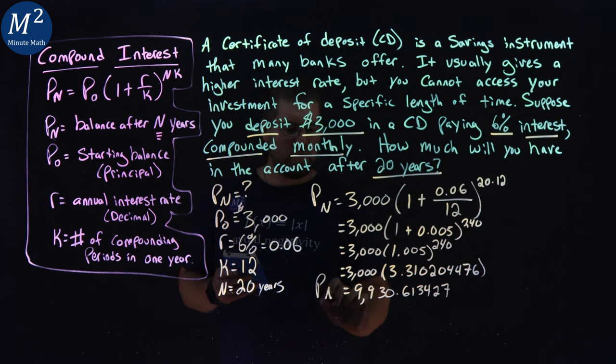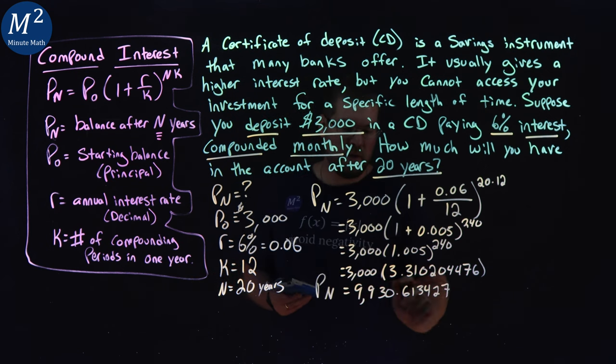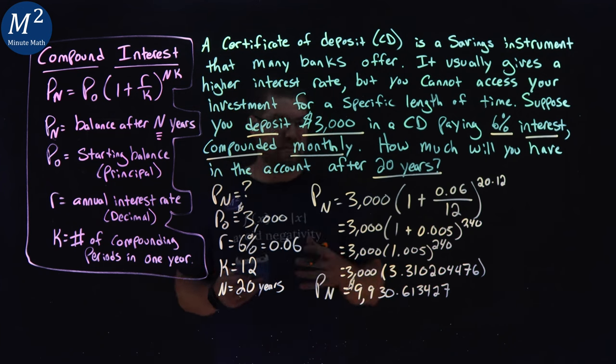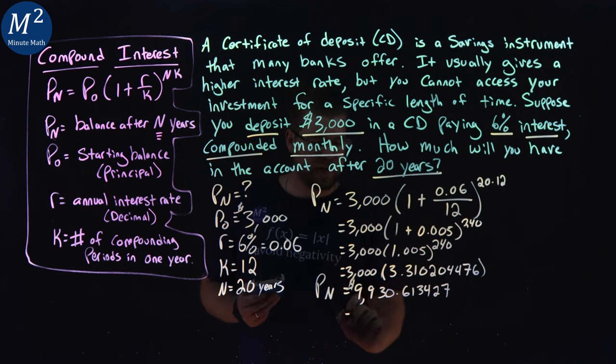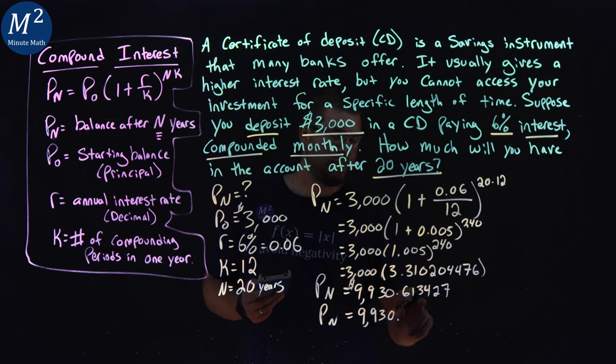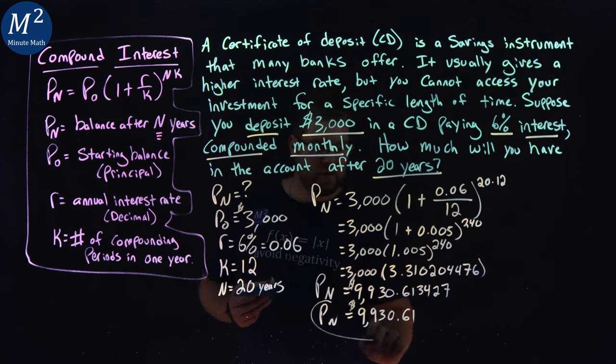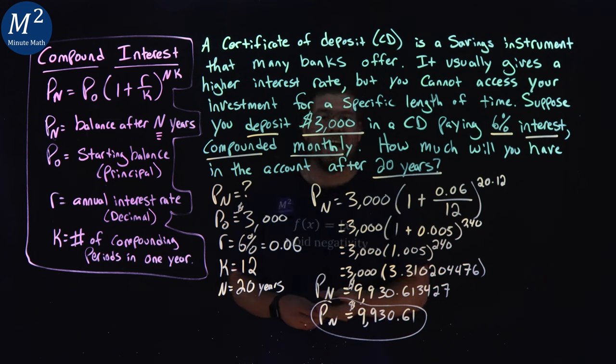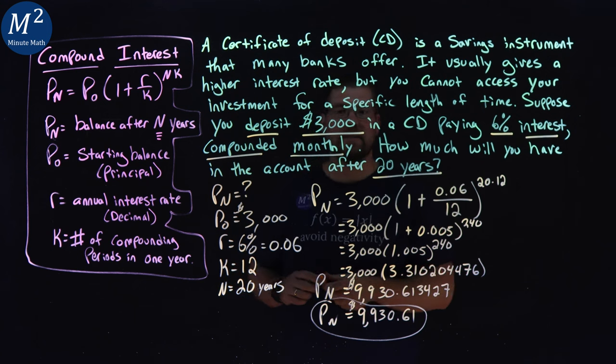Now, we want to round that one to the nearest cent because we're dealing with an amount here. So, we have to deal with cents. And I got a fraction of a penny. So, our end amount rounded, 9,930.613 keeps it a one. So, what we have here is our end amount is $9,930.61 rounded after we've had the account for 20 years.